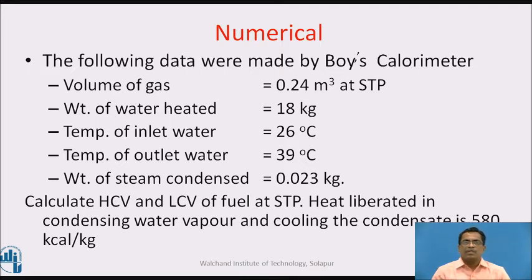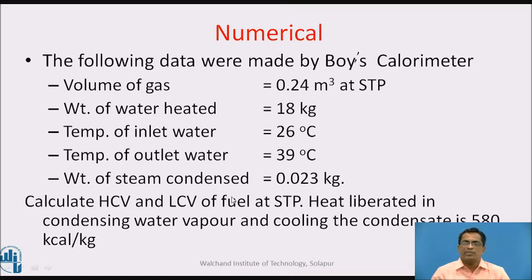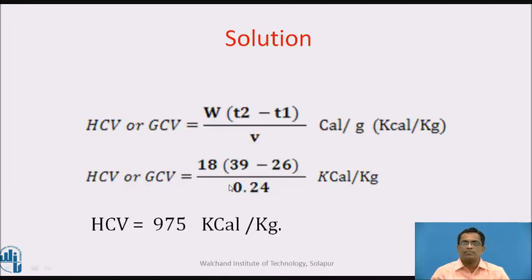Numerical 2. Following data were obtained from Boy's calorimeter experiment: volume of gas V = 0.24 m³, weight of water heated W = 18 kg, temperature of inlet water T1 = 26°C, temperature of outlet water T2 = 39°C, weight of steam condensed = 0.023 kg. Calculate HCV and LCV of fuel at STP. Heat liberated in condensing water vapors and cooling the condensate = 580 kcal/kg. Using the formula: HCV = 18 × (39 − 26) / 0.24, we get HCV = 975 kcal/kg.